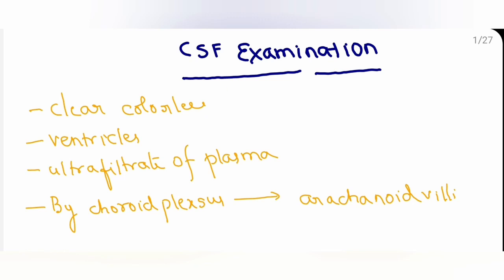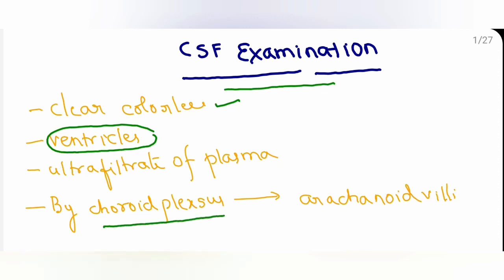The topic for today is CSF examination. CSF stands for cerebrospinal fluid. This fluid is colorless and is found in the ventricles of the brain. It is produced by something known as the choroid plexus. CSF is nothing but an ultrafiltrate of plasma. After circulating in the ventricles and spinal cord, it is absorbed by the arachnoid villi.